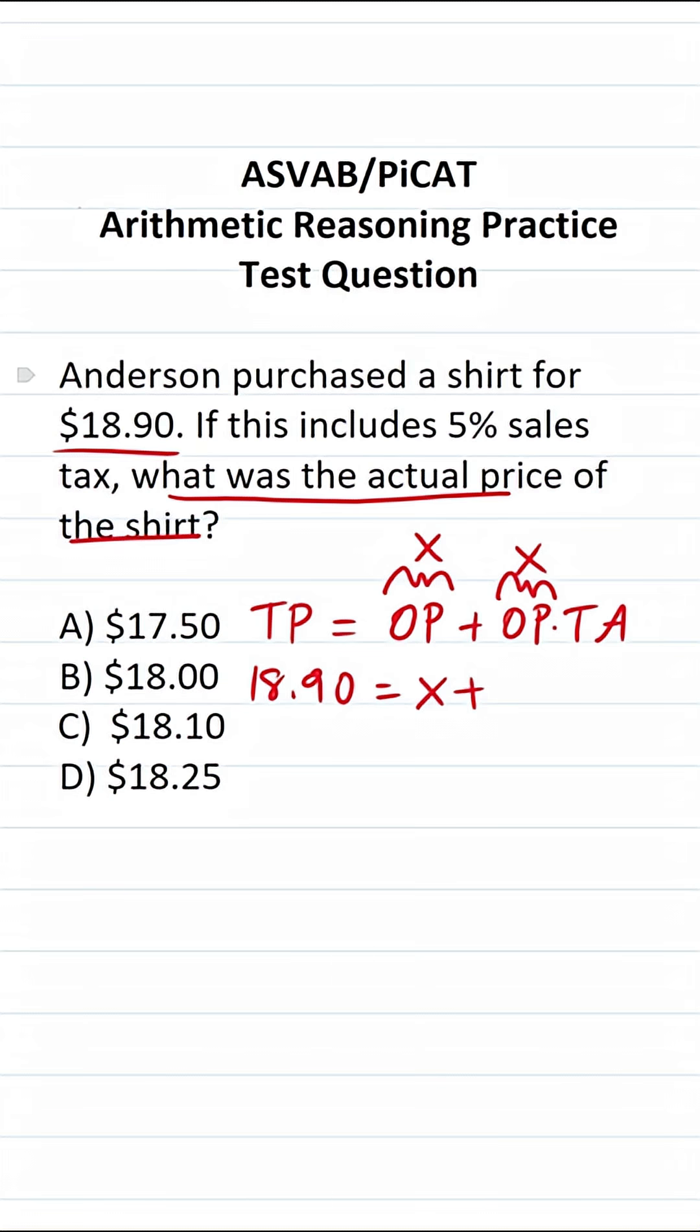What is the tax amount? It's 5%, which we're going to express in decimal form as 0.05. So this becomes X times 0.05.